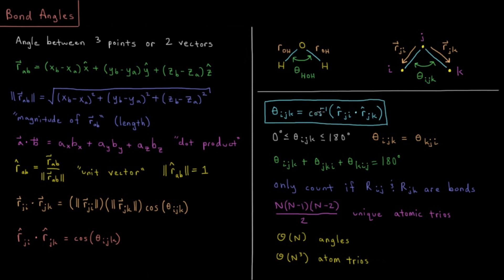The arc cosine has a range from 0 degrees to 180 degrees, so our bond angle is restricted: the smallest it can be is 0 degrees (0 radians) and the largest is 180 degrees (pi radians). We also have symmetry here: theta_kji is the same as theta_ijk, so reversing all the indices gives the same bond angle.